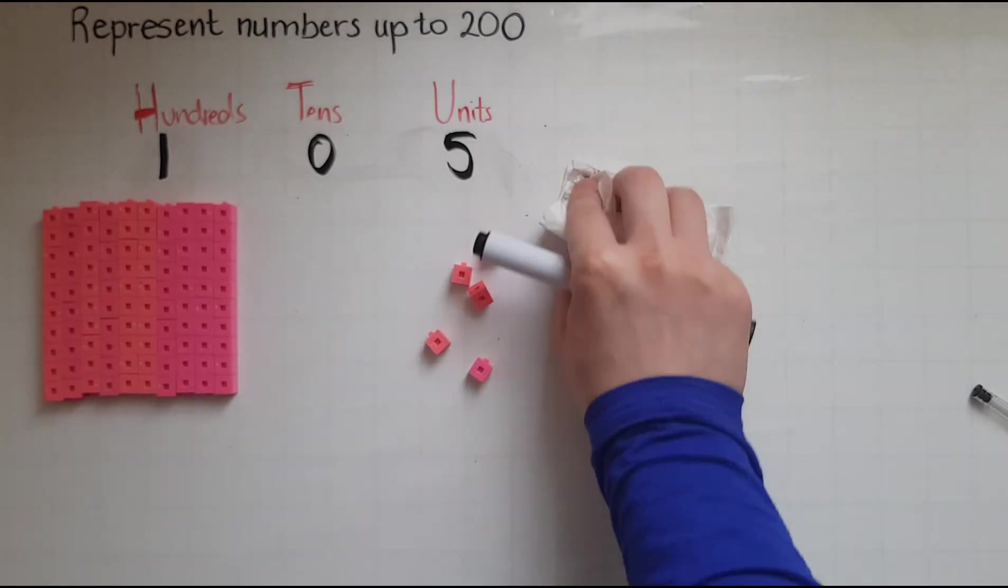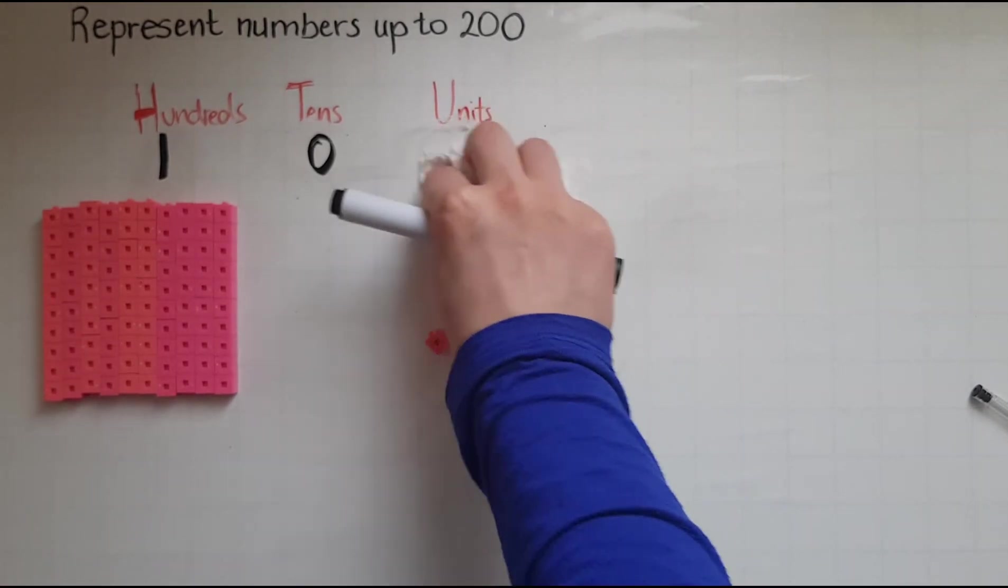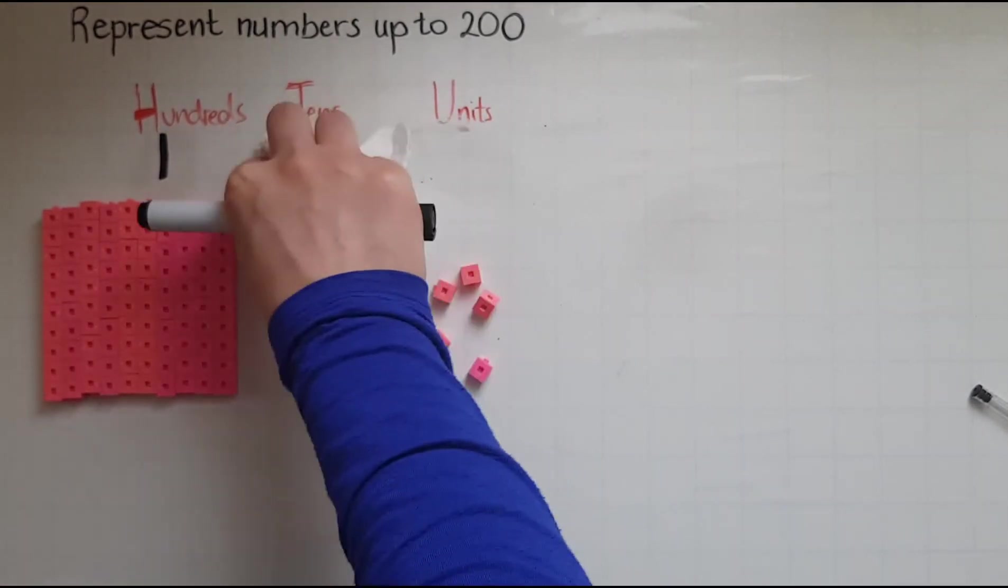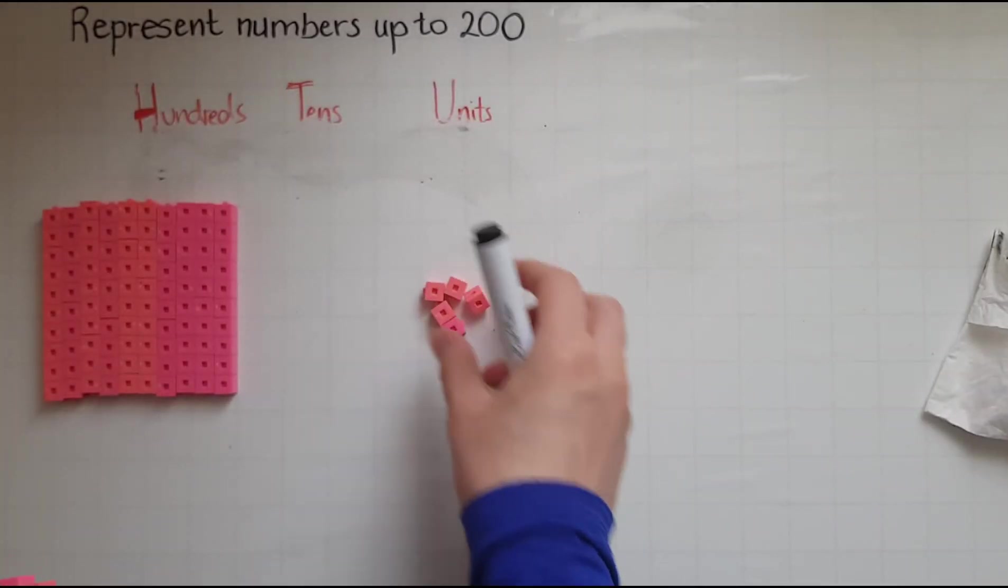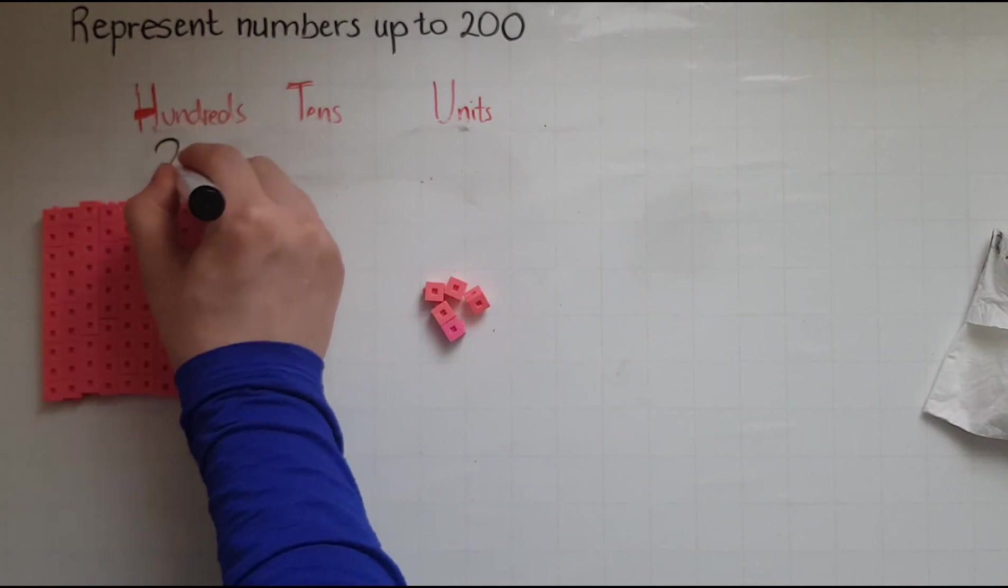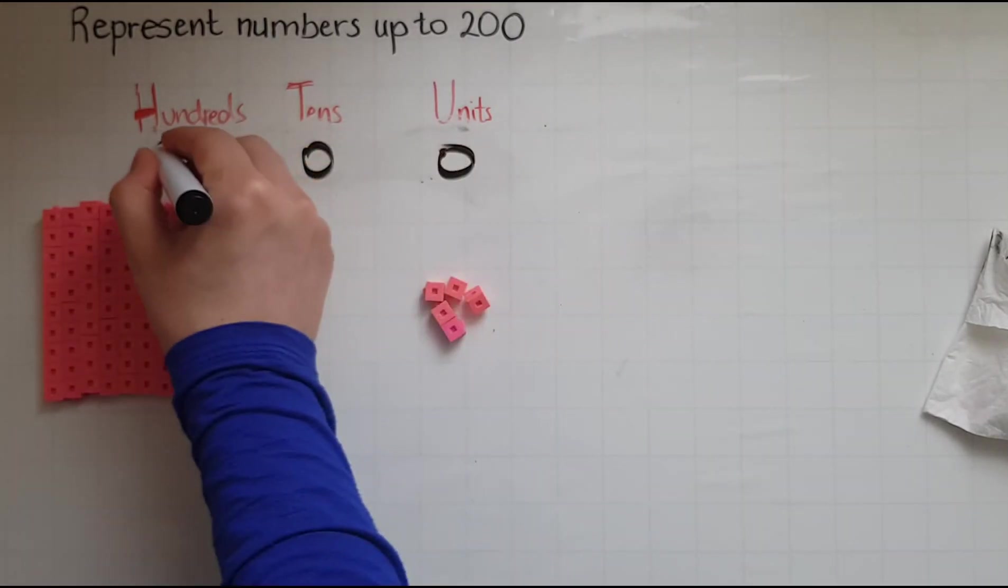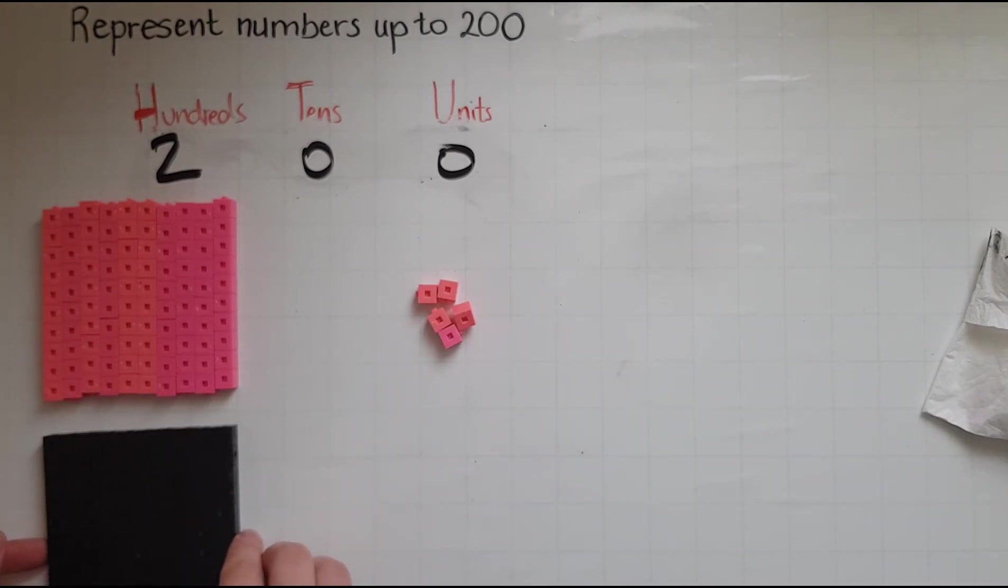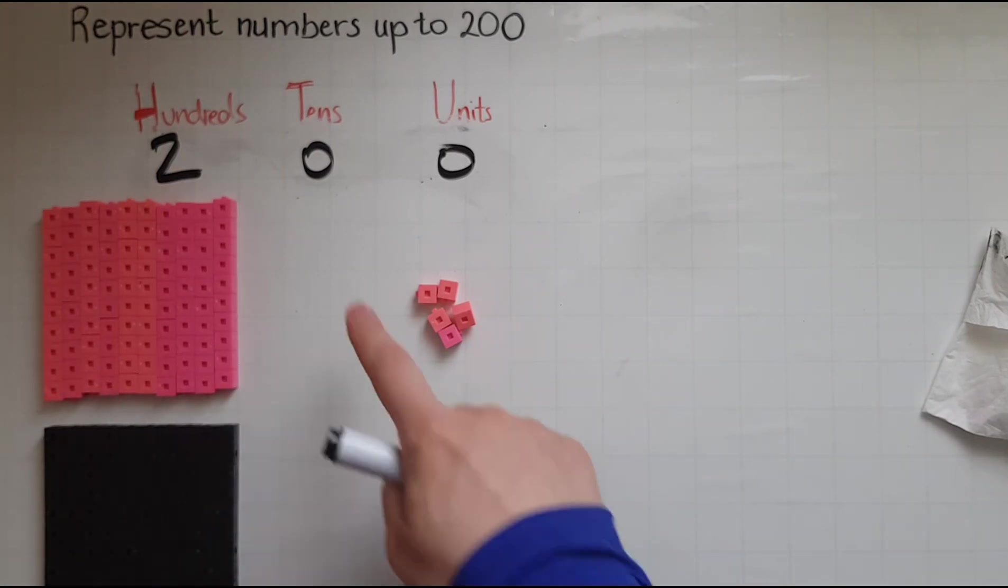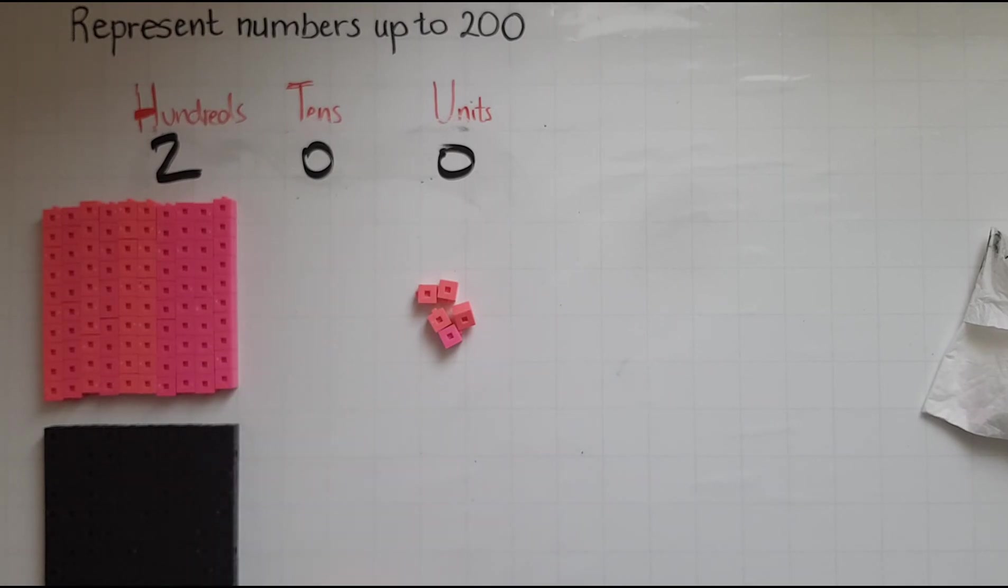And finally, how would I represent two hundred? How could I show two hundred? So two hundred. That suggested that two blocks of hundreds. So I'll bring over another block. There we have one, two blocks. Do I have any tens? No, I don't need any tens and no units.